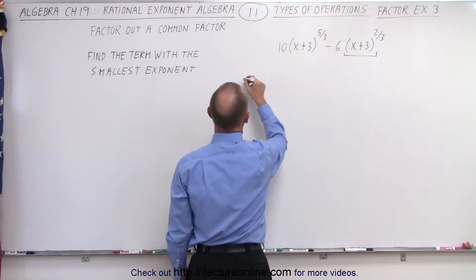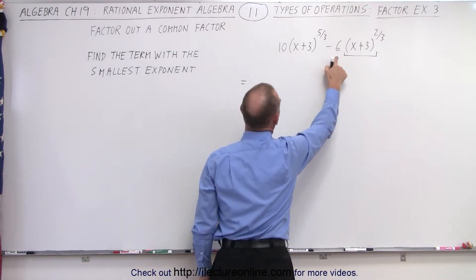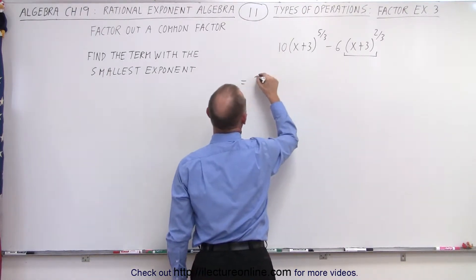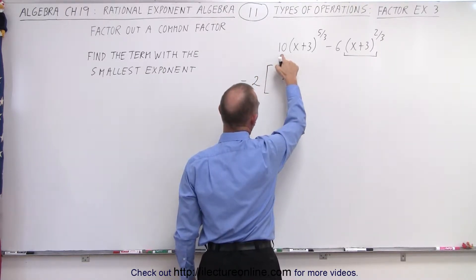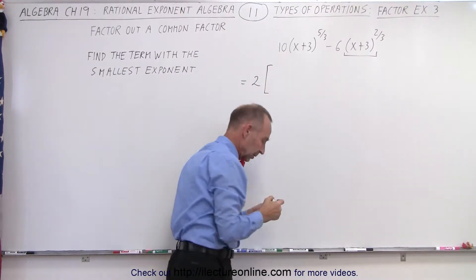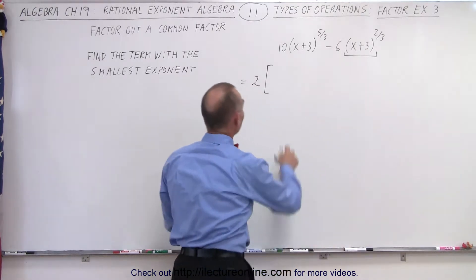So this becomes equal to... the common factor with 10 and 6 is going to be 2, so it's 2 times. I'm going to factor out a 2.